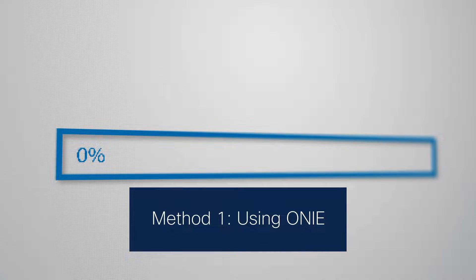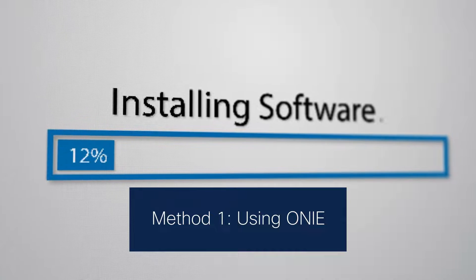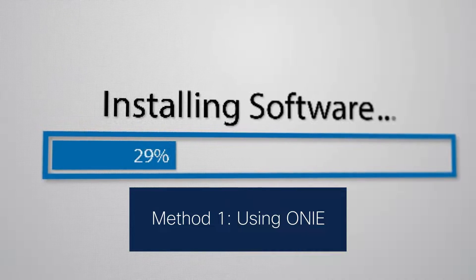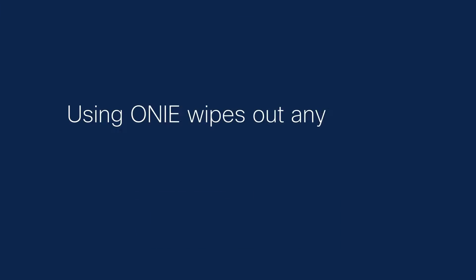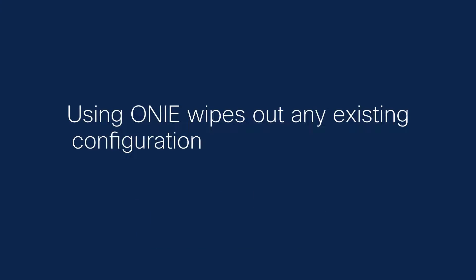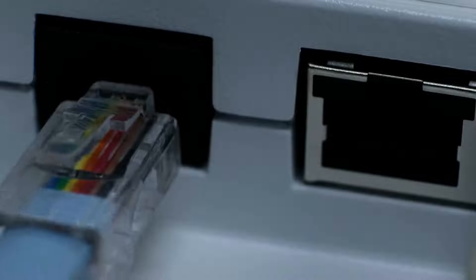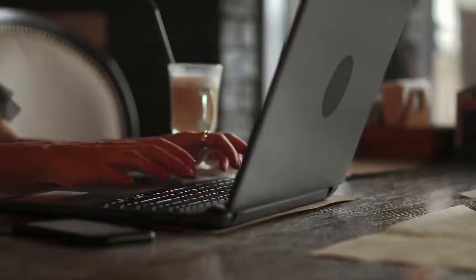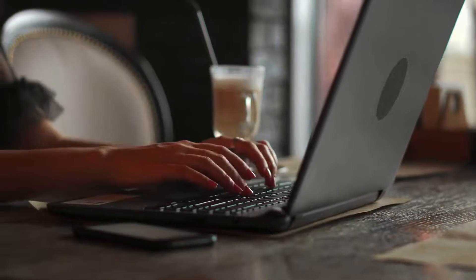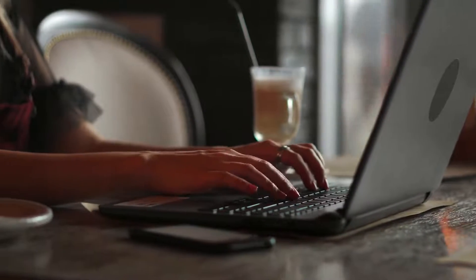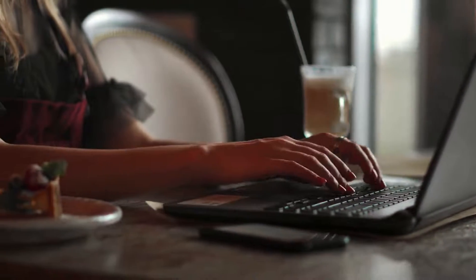In the first method, we use ONIE to install a new SONiC image. Using ONIE wipes out any existing configuration and router state for a fresh installation. Ensure that you connect the management port to your management network, and access the device using the console port for this method.